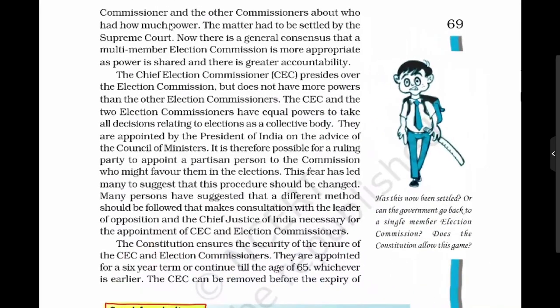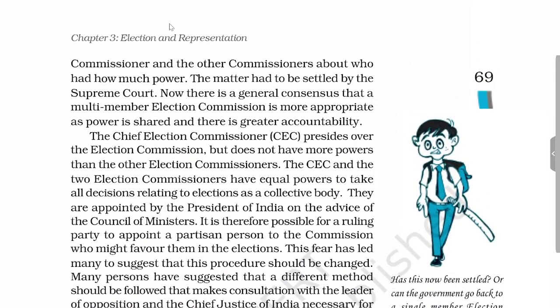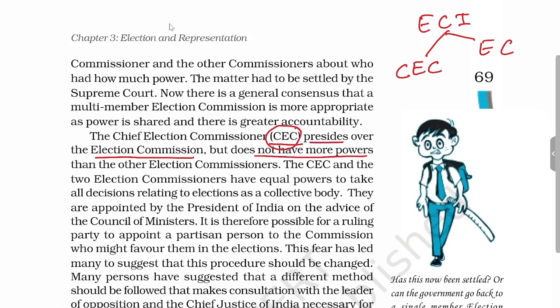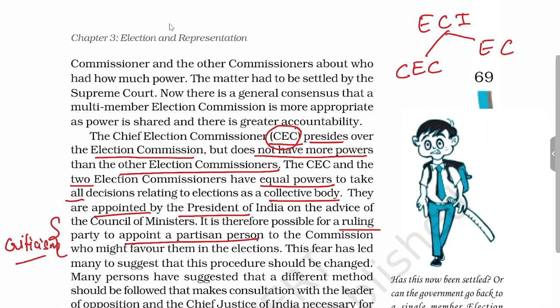The Election Commission consists of the Chief Election Commissioner (CEC) and two other Election Commissioners. The Chief Election Commissioner presides over the Election Commission but does not have more powers than the other commissioners. The two other Election Commissioners have equal power and all decisions are taken as a collective body. They are all appointed by the President of India, which is a criticism — the ruling party could appoint a partisan person.